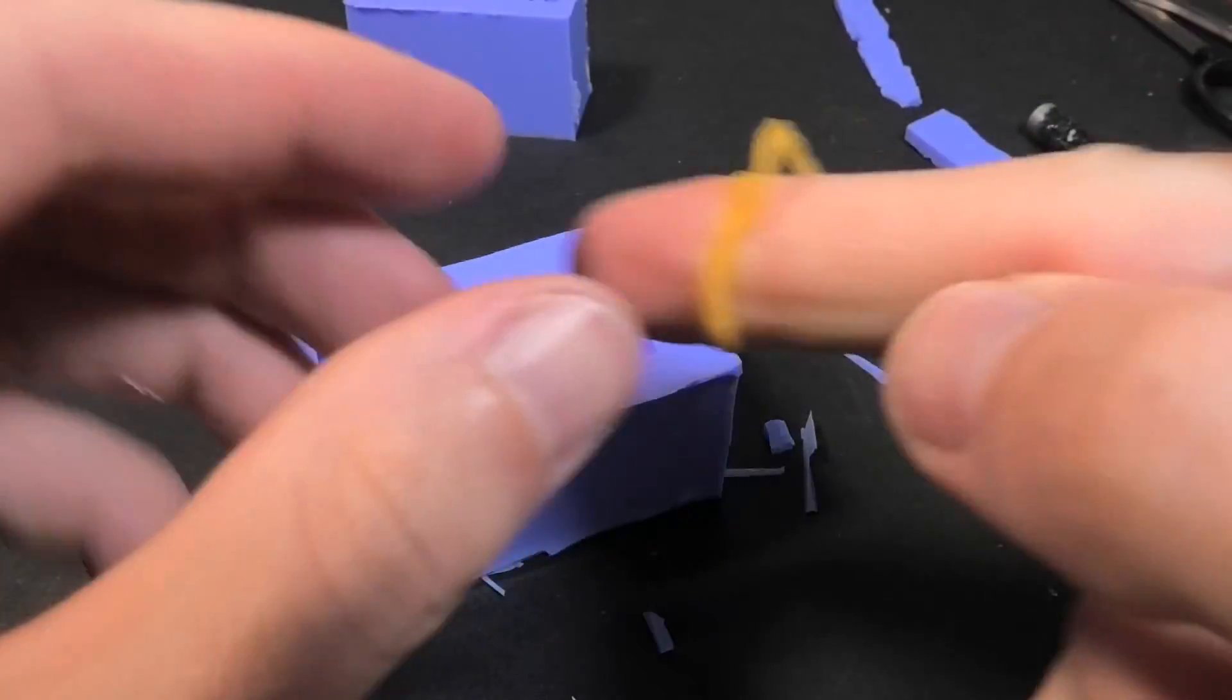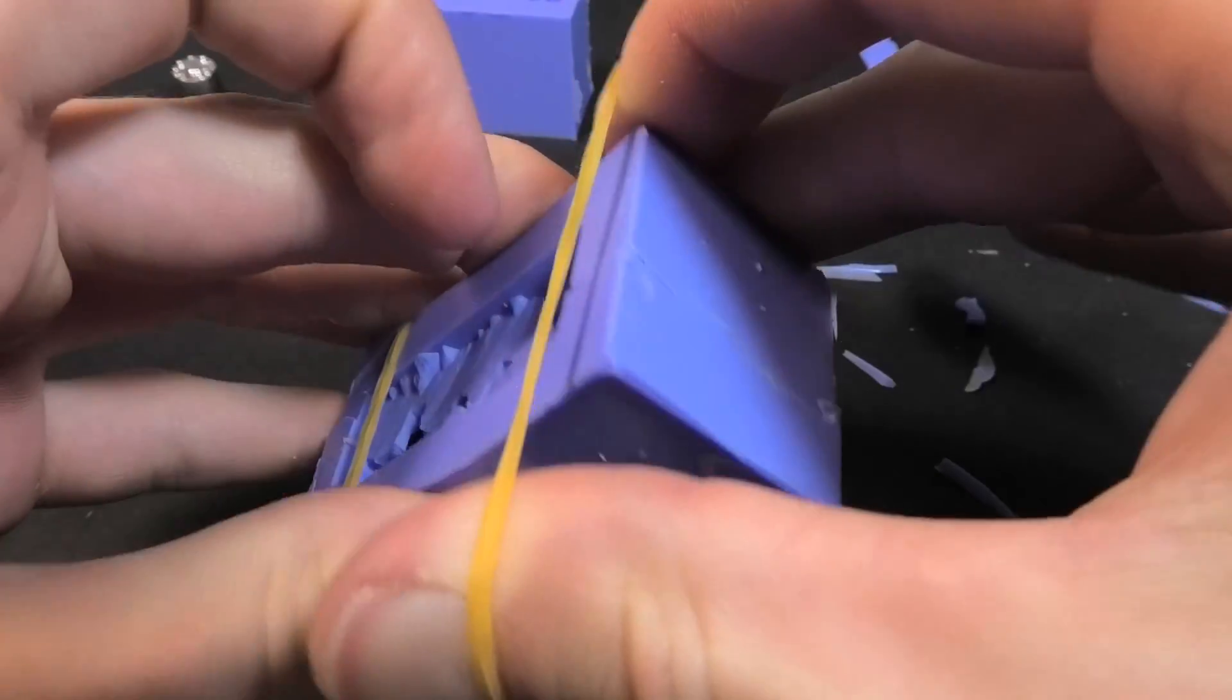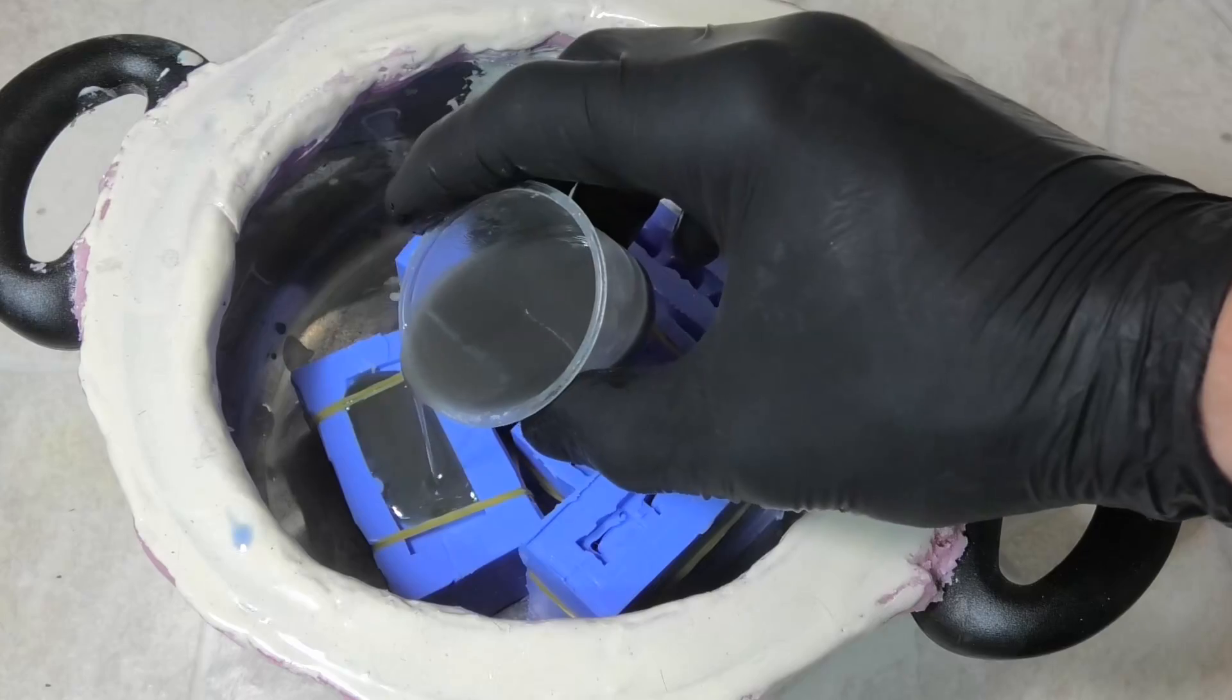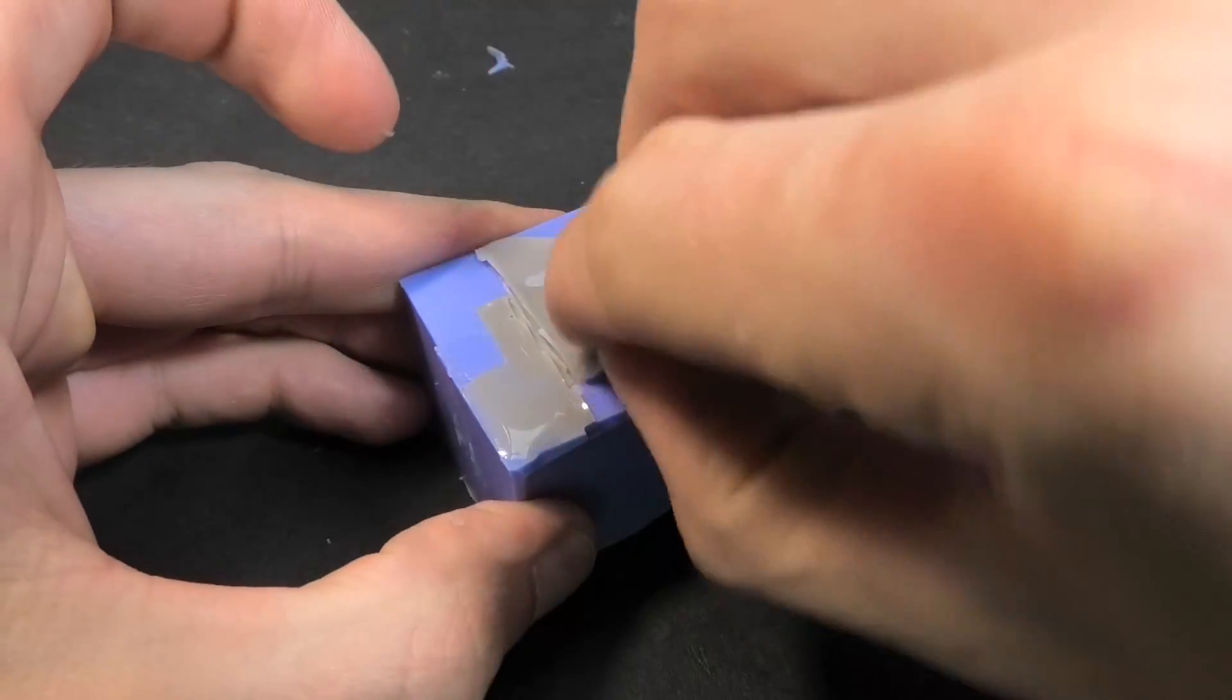I am making it from the side where are no details and will be easy to remove spout safely. I fixed the position of two molds with rubber bands. This process you already know. I am pouring resin and then wait a few hours. Okay, this is the result.